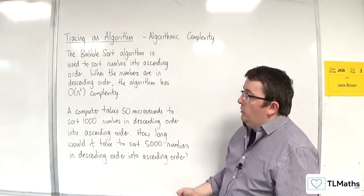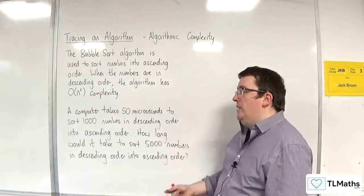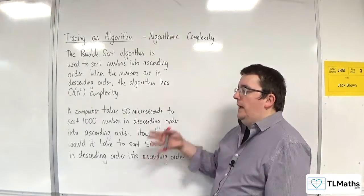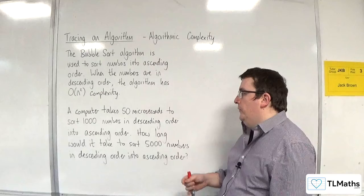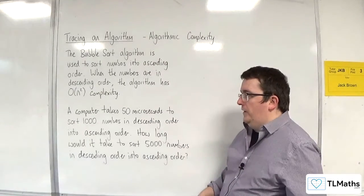A computer takes 50 microseconds to sort 1,000 numbers in descending order into ascending order. How long would it take to sort 5,000 numbers in descending order into ascending order?